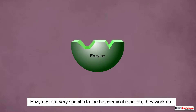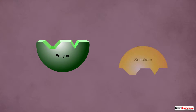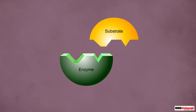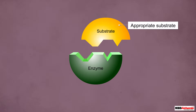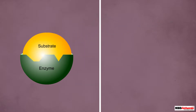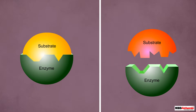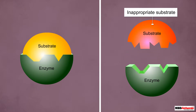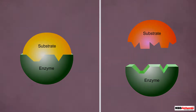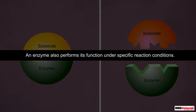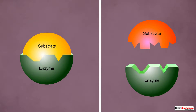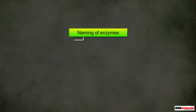Enzymes are very specific to the biochemical reaction they work on. This is because an enzyme performs its function only in the presence of a specific substrate — if the substrate on which the enzyme has to work is not appropriate, it does not perform its function. Other than the specific substrate, an enzyme also needs specific reaction conditions to work.